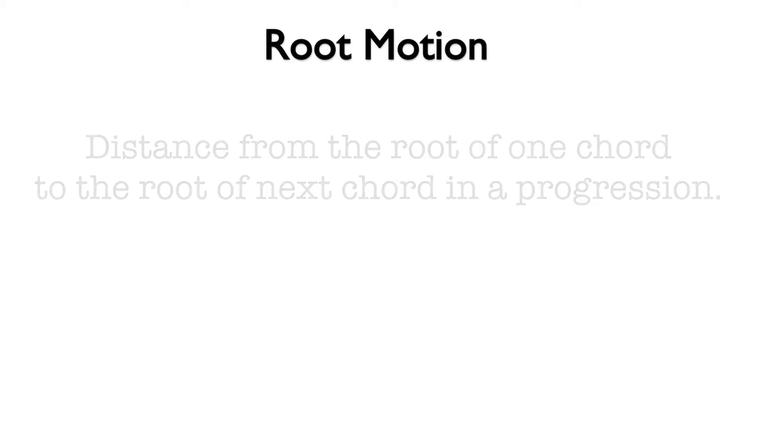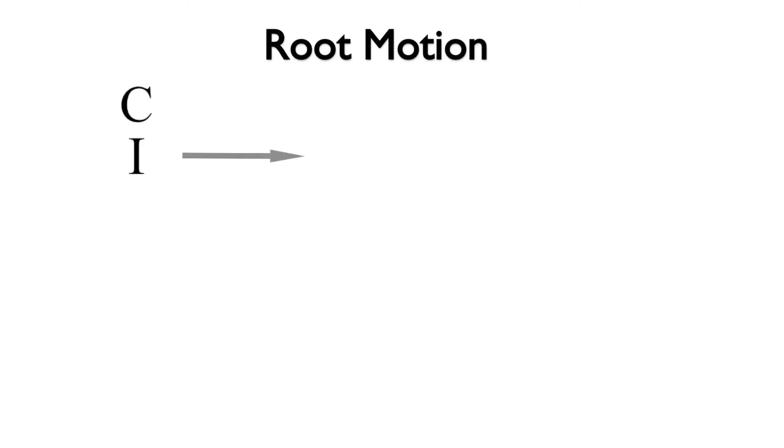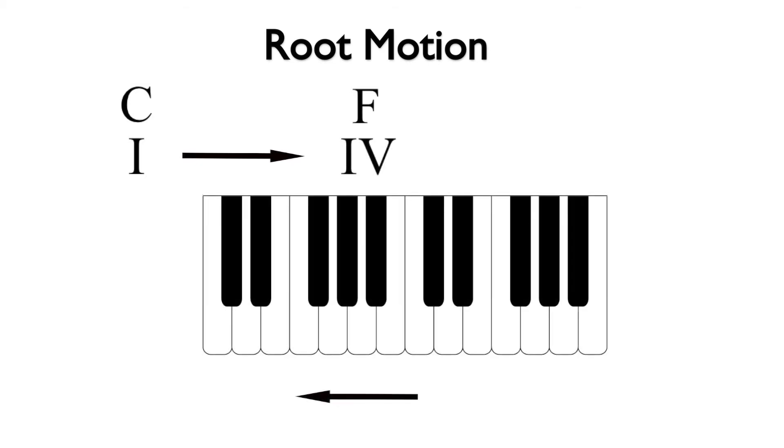For example, if we begin on a C chord as a I chord in the key of C and follow with an F or a IV chord, we have moved down by the interval of a fifth. If we move from the IV chord of F to the II chord of D minor, we have moved down by a third.